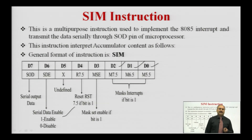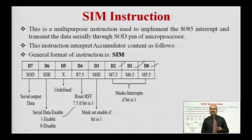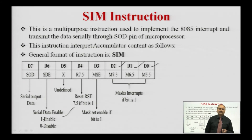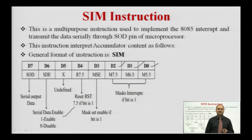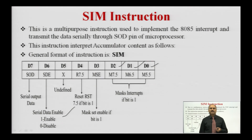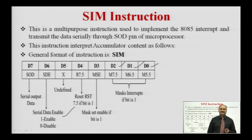The vector address of hardware interrupts is also calculated by multiplying the interrupt number by 8 — except for INTR, which is a non-vector interrupt whose vector address is given by the interrupting device. The microprocessor serves interrupt requests based on priority: TRAP (RST4.5) has the highest priority, then RST7.5, then RST6.5, then RST5.5, and finally INTR. According to priority, the processor accesses the request.